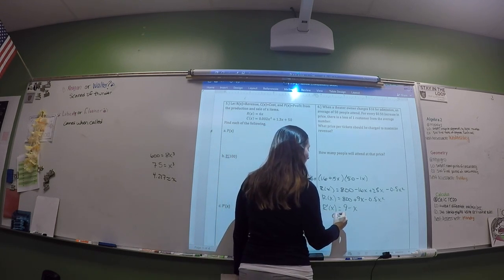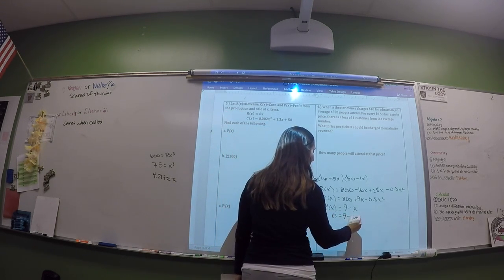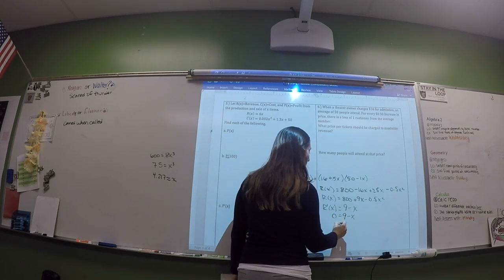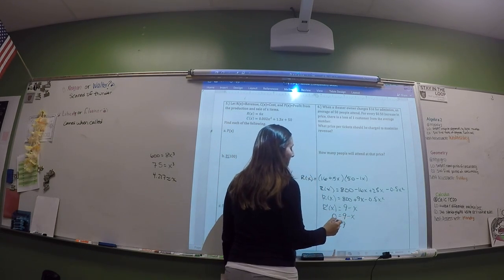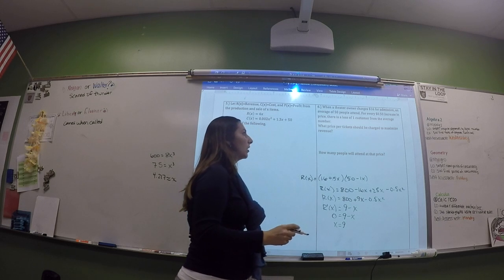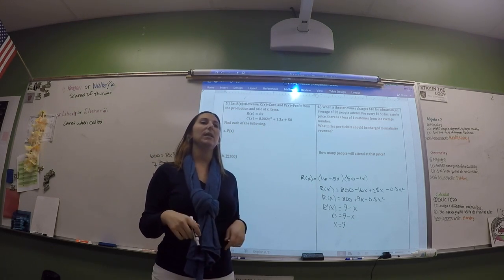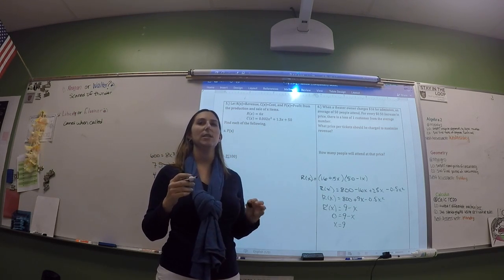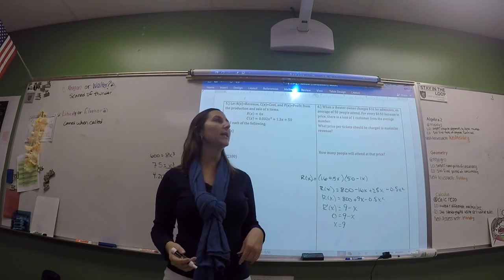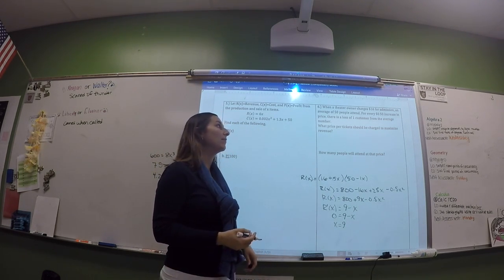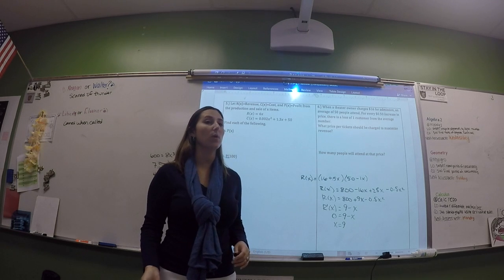Set the derivative equal to 0 and you get X equals 9. It doesn't have to be a nice number — it could be 9.5 or 9.4.